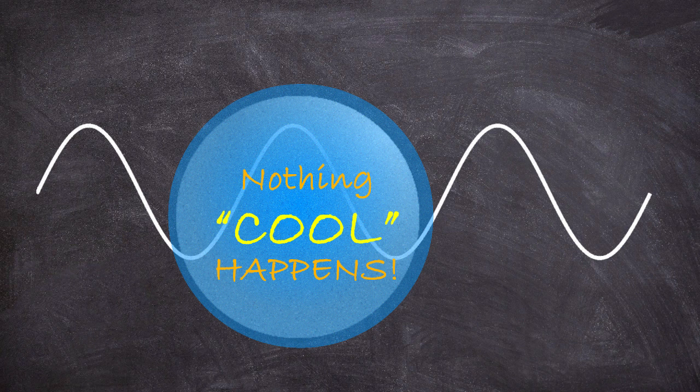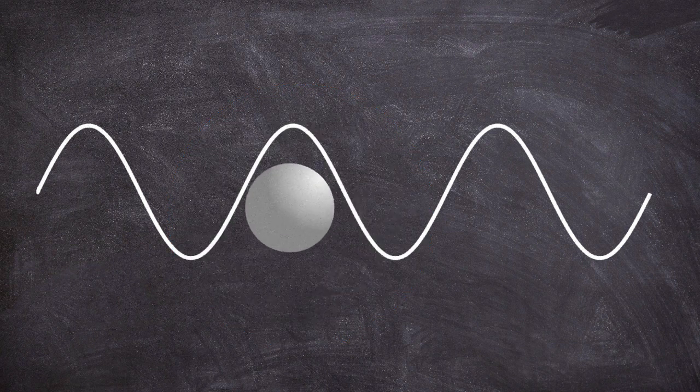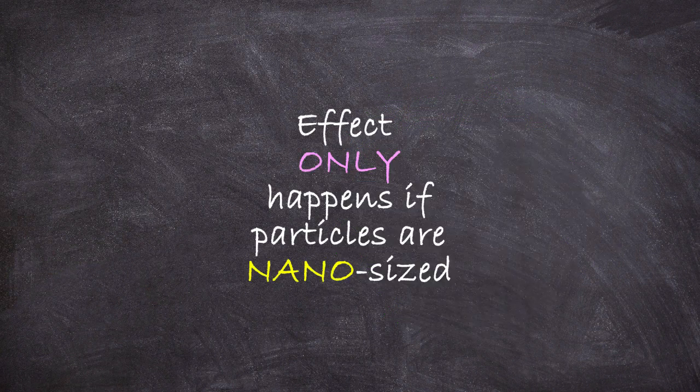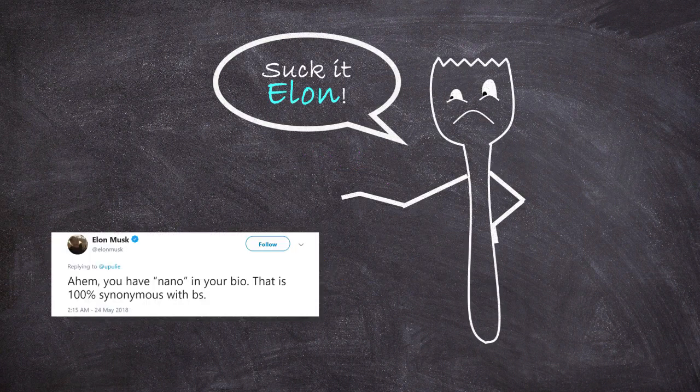And these effects only happen if these particles are much smaller than the wavelength of the light. Since visible light has wavelengths in the hundreds of nanometers, these particles need to have sizes of say 20 nanometers. In other words, the title of nano is well earned because it's an effect that doesn't exist if they were any larger. There is no field of microplasmonics.